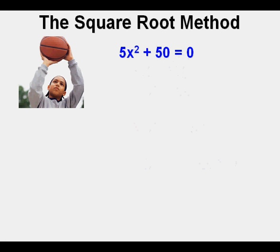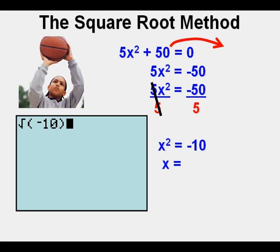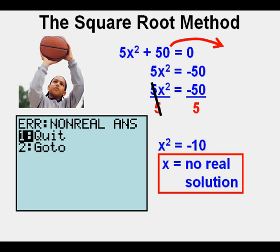Let's solve this one with Joe: 5x squared plus 50 equals 0. His first step is to move the 50 across the equal sign, making it negative 50 on the right side, giving 5x squared equals negative 50. He then divides both sides by 5, cancels, and gets x squared equals negative 10. Entering the square root of negative 10 in the calculator gives an error message: non-real answer. This is because no number multiplied by itself can produce a negative number, so this equation has no real solution.